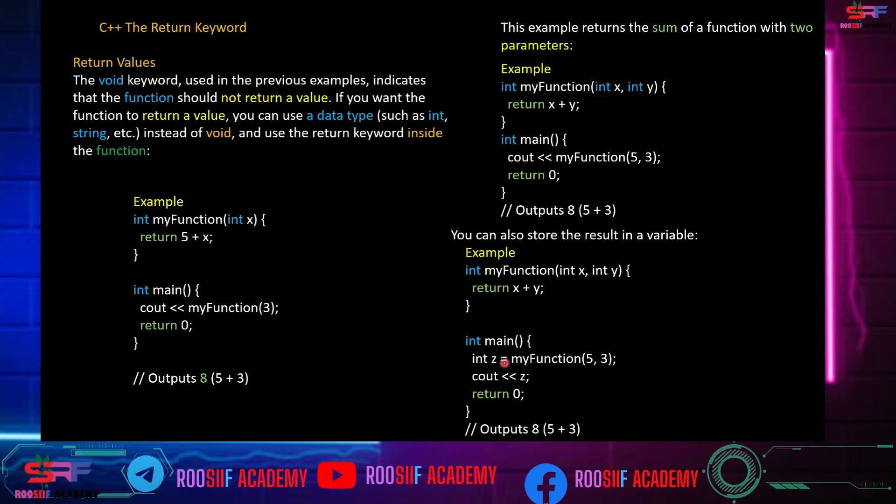If myFunction has three parameters x, y, and z, we pass values like 5, 3, and 4. This demonstrates return value with multiple parameters.